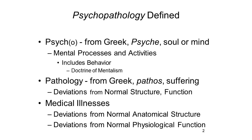The term makes it clear that mental illness is in some sense analogous to physical illness. Just as physical illness involves abnormalities of bodily structure and function—anatomy and physiology—so mental illness involves abnormalities of mental structure and function: abnormalities of cognition, emotion, and motivation that result in abnormal, deviant behavior.